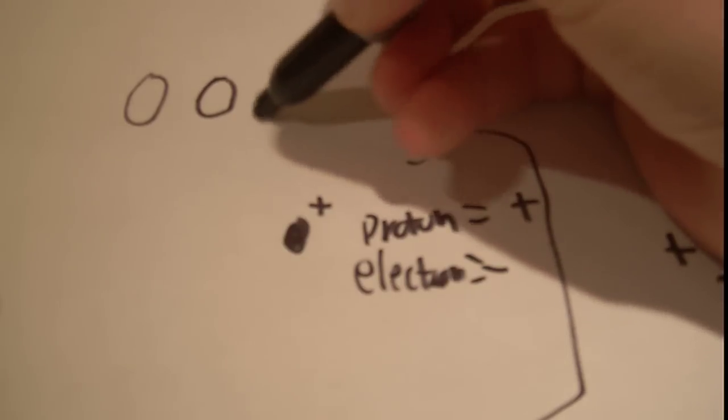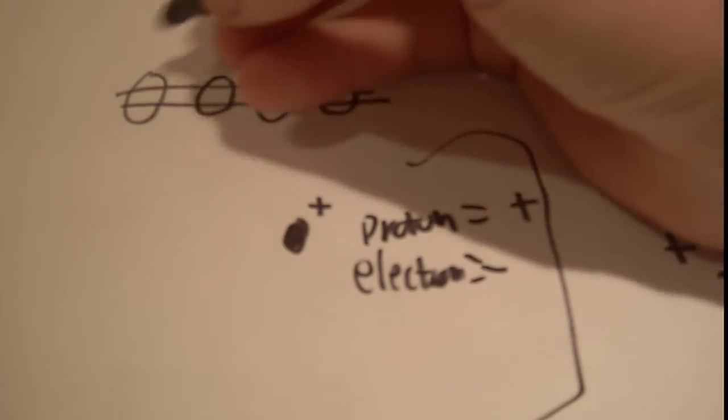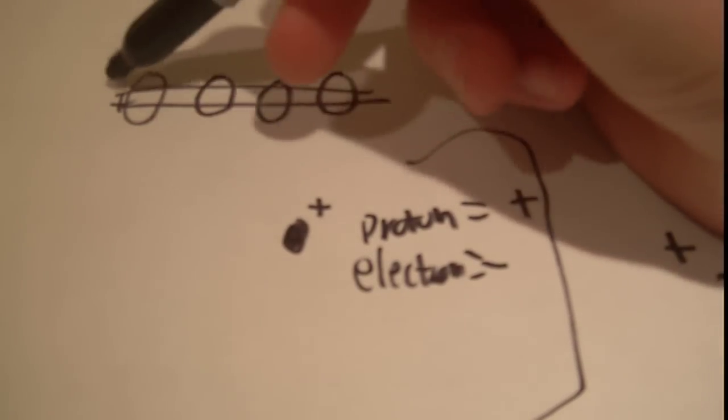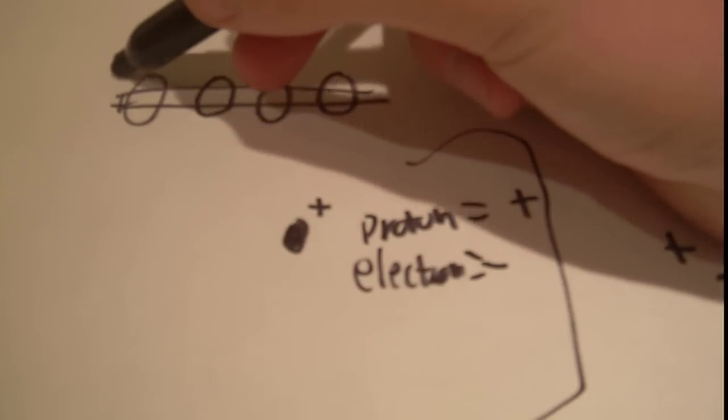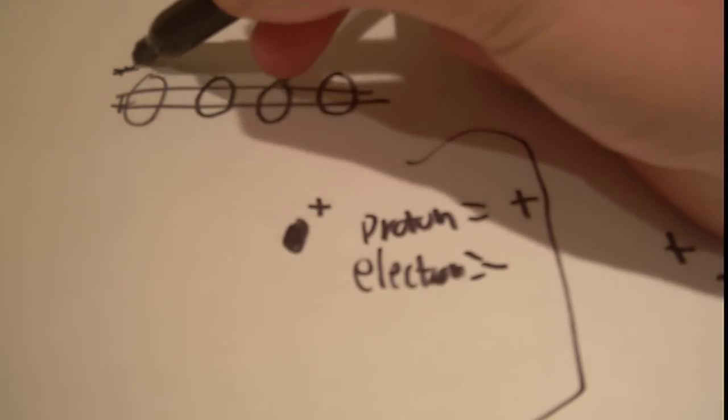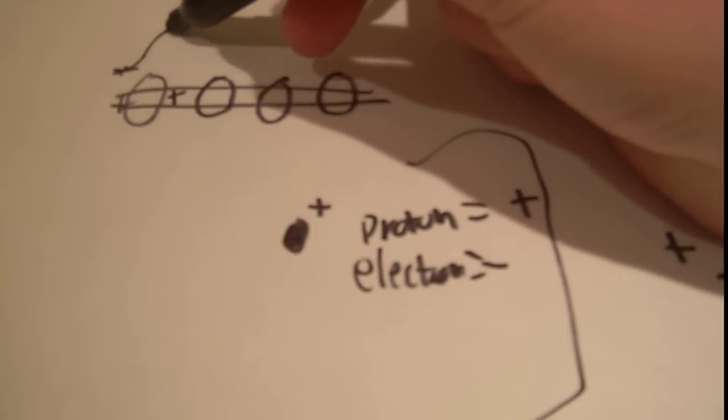And they feed that into some rings that are surrounding a vacuum pipe where the protons go. And they've timed it so that when the proton is here, it's at the bottom, right? And when the proton is here, it's at the top.